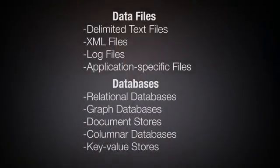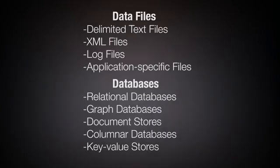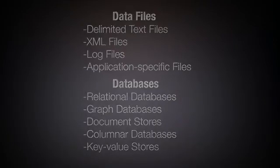So let's recap. We've learned about two broad types of data storage: data files and databases. We talked about file systems and specific file formats like delimited text files, XML files, log files, and application-specific files. We introduced databases and covered types like relational databases, graph databases, document stores, columnar databases, and key-value stores. As a data analyst, you'll almost certainly encounter a number of these storage mechanisms and need to understand how to work with them. We will go deeper into relational databases, and in subsequent courses we'll use Excel and more advanced tools to execute different types of analysis.